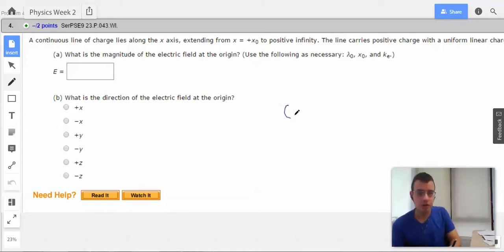So draw the line of charge like so. This goes to infinity. They both go to infinity. And this goes to zero, goes out this way. And this starts at x-naught.